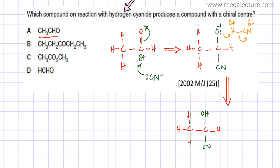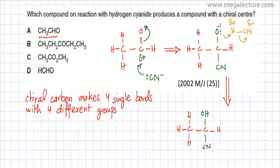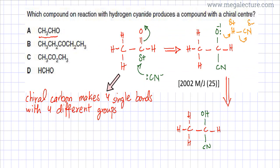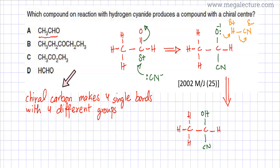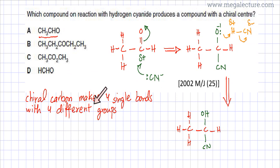What the question is asking is: which compound on reaction with HCN produces a compound with a chiral center? A chiral carbon is generally a carbon that makes four single bonds with four different groups. When it does that, it has no plane or line of symmetry, and it ends up forming two versions of itself which are mirror images of each other.